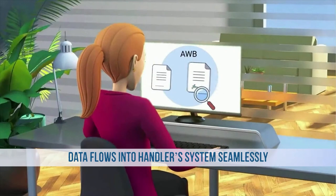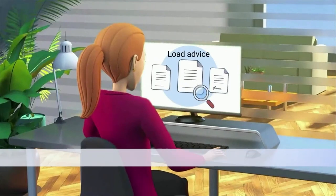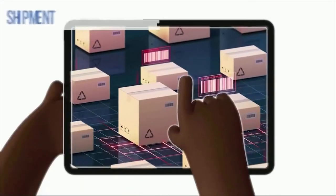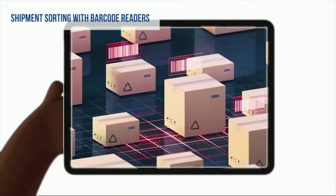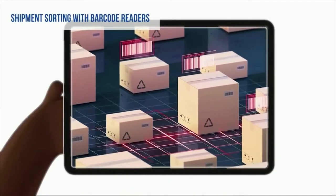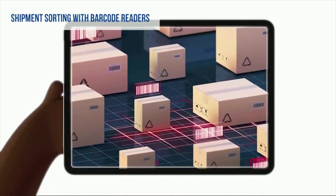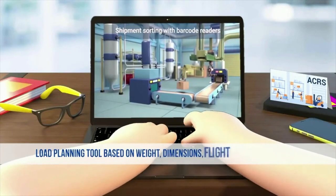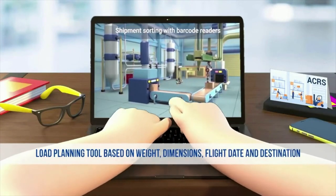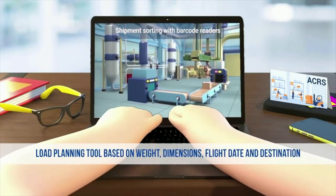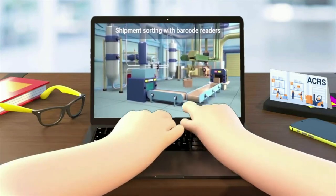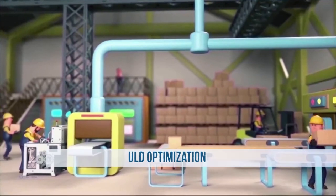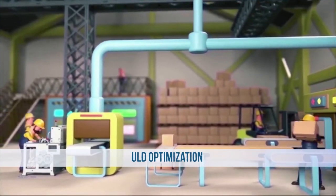Shipment sorting with artificial intelligence based on airway bills and destination pin codes. Robotics and artificial intelligence powered warehouse operations like load planning based on data from weight, dimensions, flight date, and destination. ULD optimization and bots to move cargo.